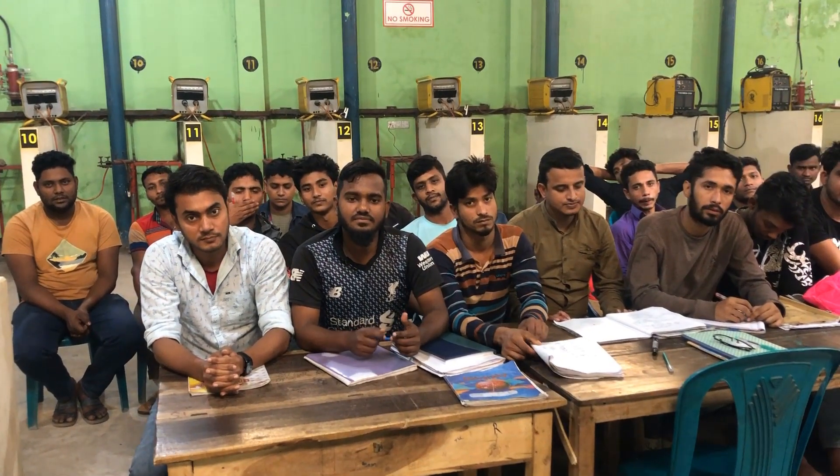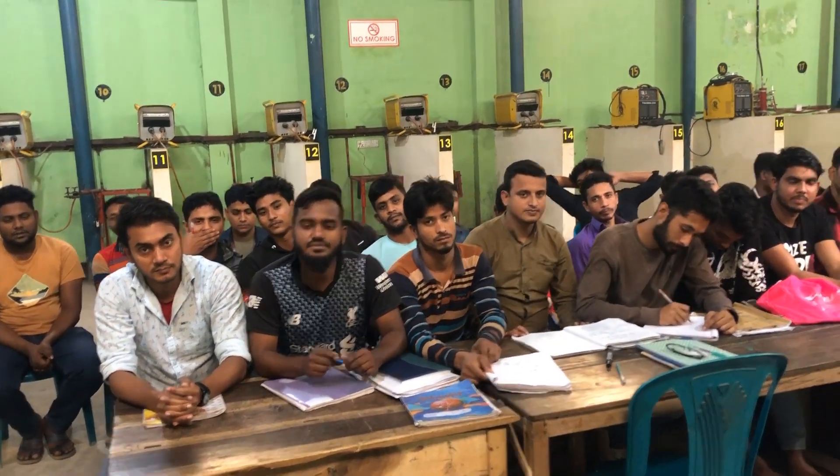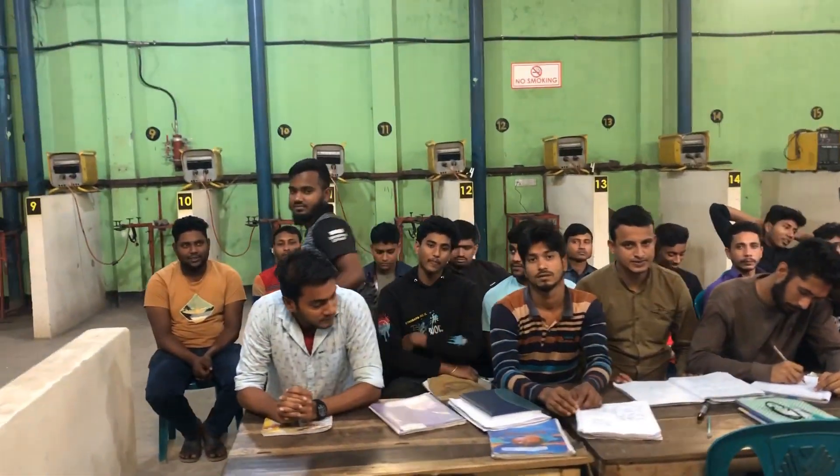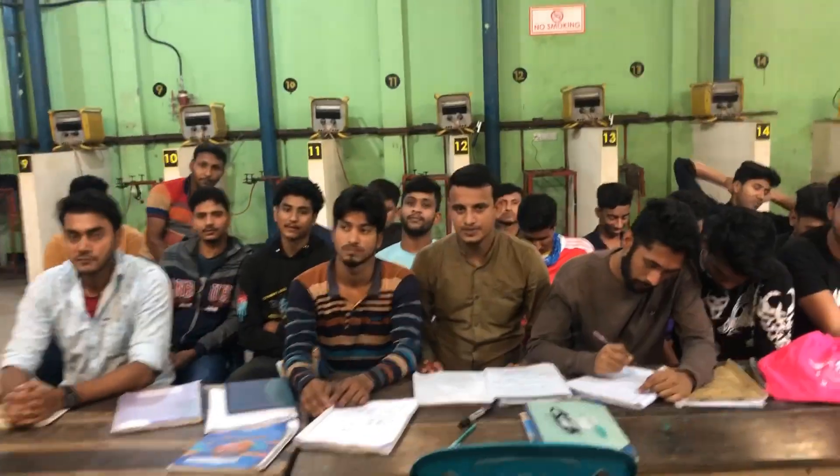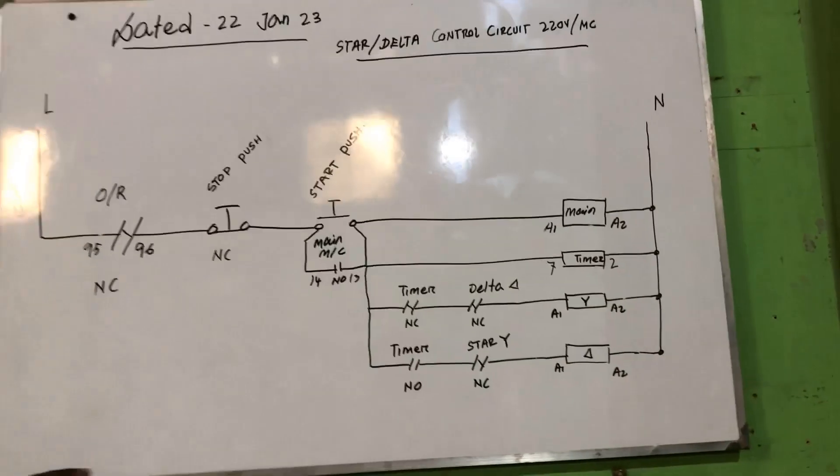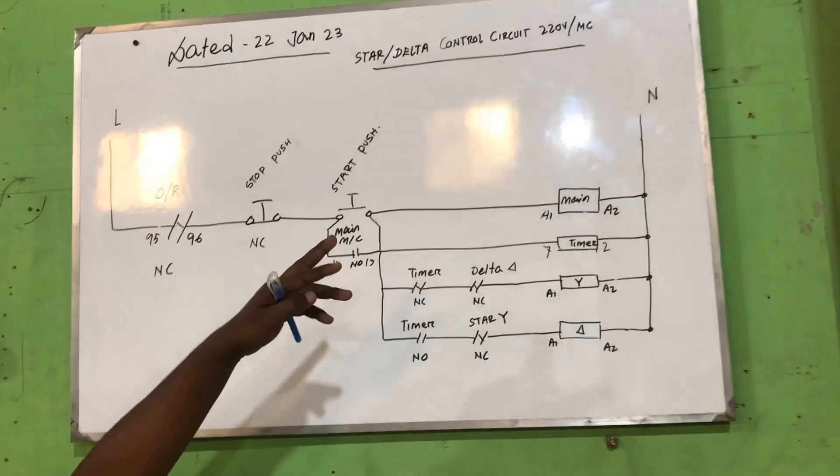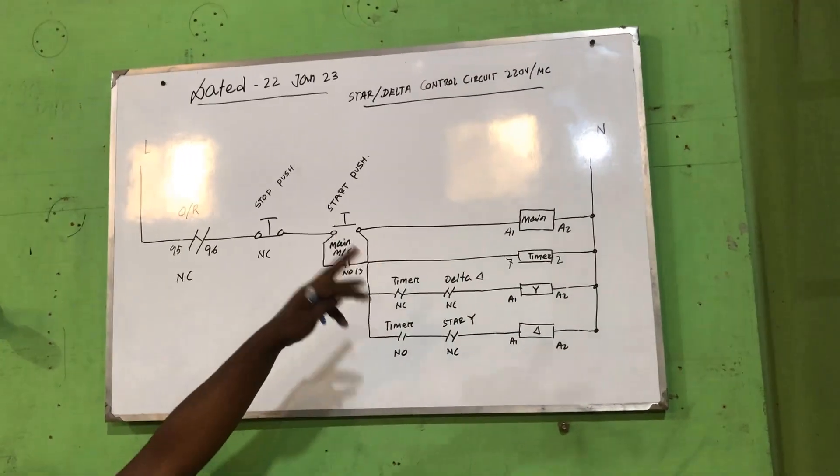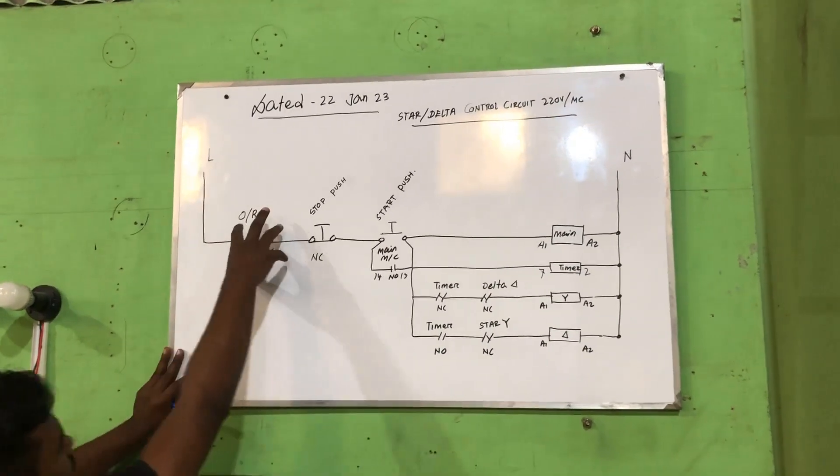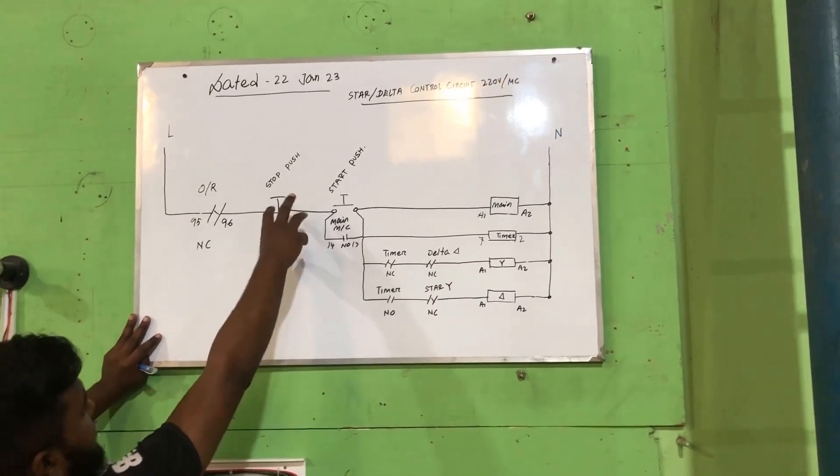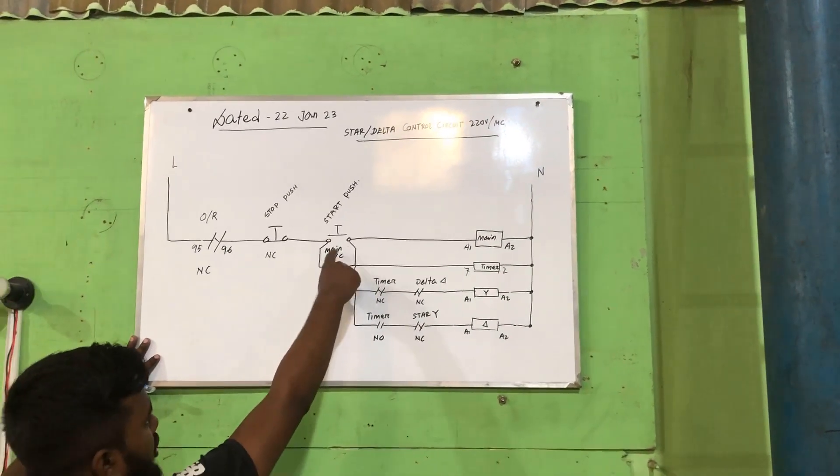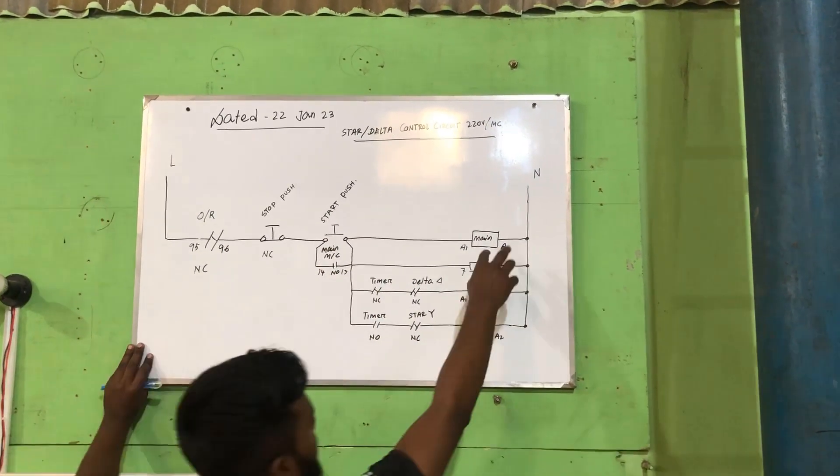Come up. Okay, this is star-delta control circuit. 220V, MC, MC means magnetic conductors. This is main test line. It is overload. It is star port. Main magnetic conductors go to main holding coil.